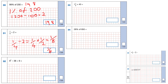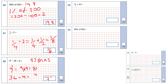Question 32: 9 squared minus 36 divided by 9. Using BIDMAS, work out the index first: 9 squared is 9 times 9 which is 81. Then the division: 36 divided by 9 is 4. Finally: 81 take away 4 is 77.